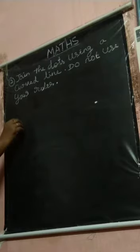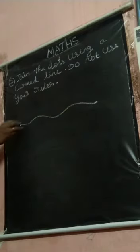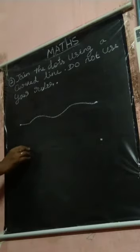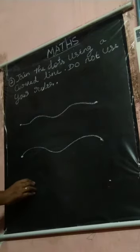Join the dots using a curve line. Do not use the ruler. Join the dots using a curve line. Using the curve line, join these two dots.